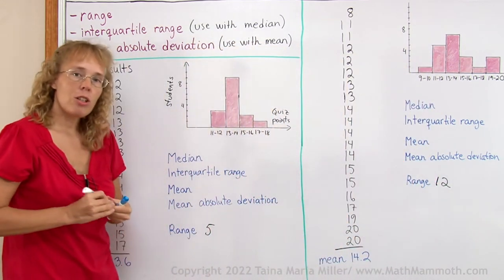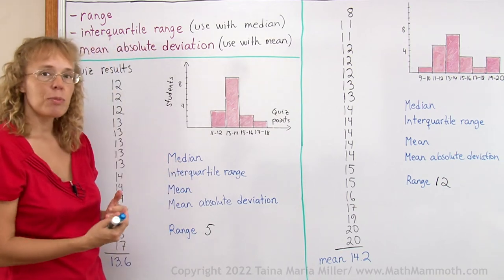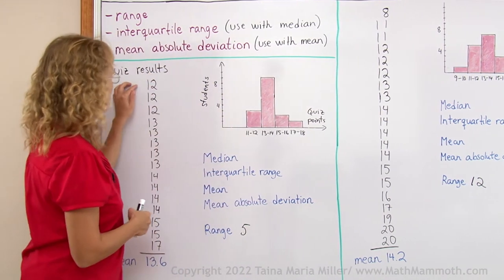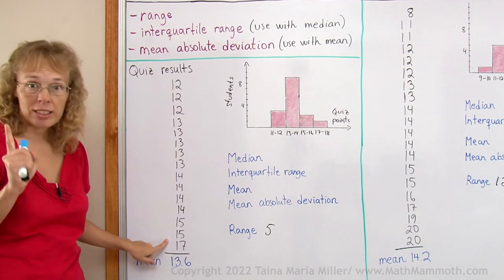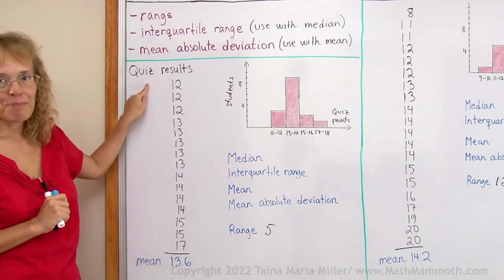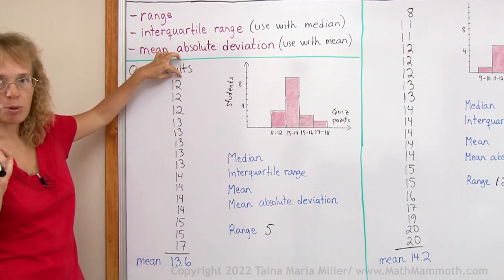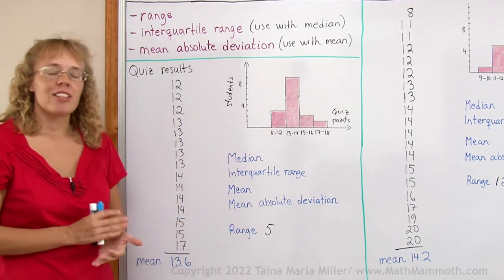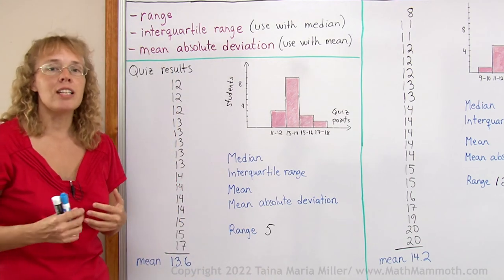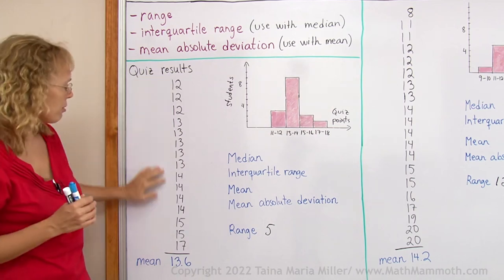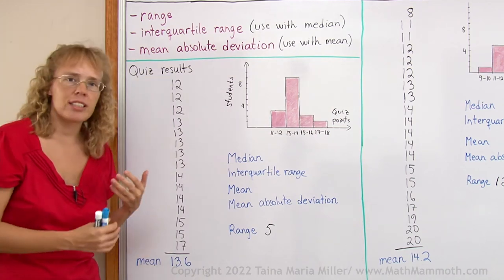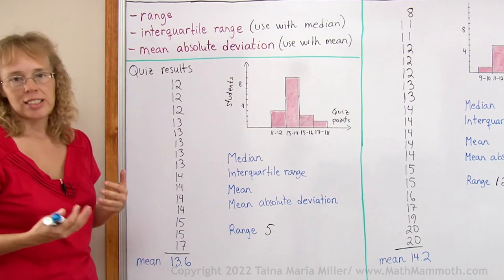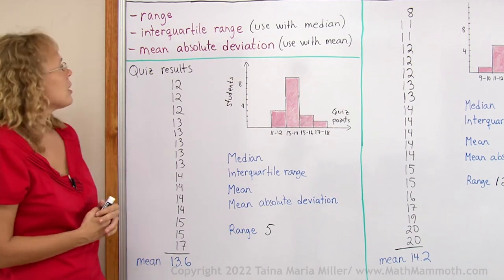However, range is not always the best measure of variation because sometimes in your data you might have an outlier. Let's say for example that here we had these students and then there was one student who got four points. If this one student was added here as four points, then that would make the range to be 13. However, that kind of data item is called an outlier because it differs so greatly from the rest of the group. It is like it didn't really belong to the group. So range is very sensitive to outliers. Let's look at these others too.